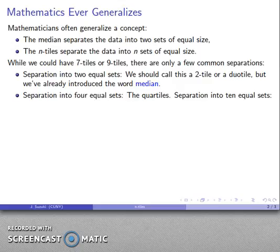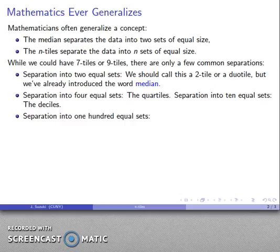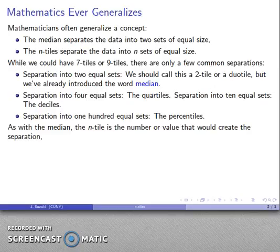one of the common separations is to separate the data into four equal sets, and this produces the quartiles. We could also try separating it into 10 equal sets. That's going to produce the deciles. And then finally, we might separate into 100 equal sets, and this produces the percentiles.